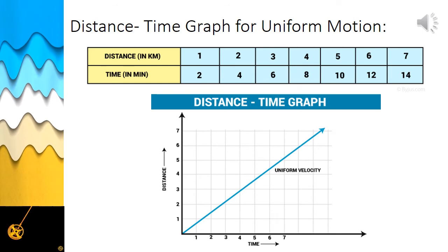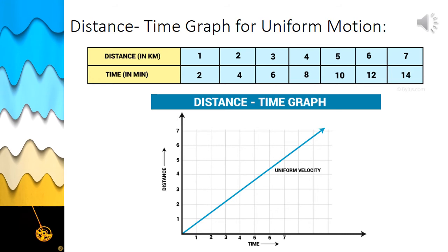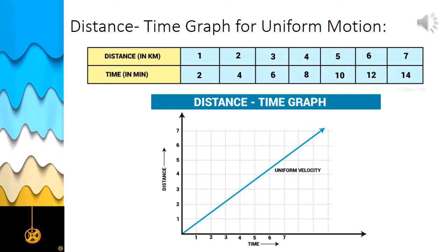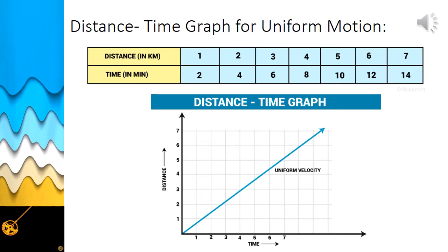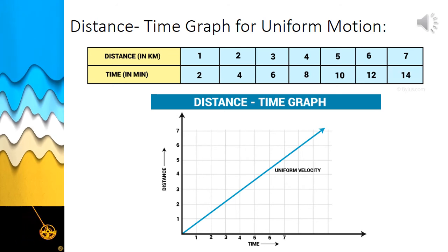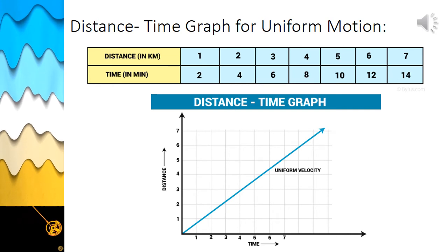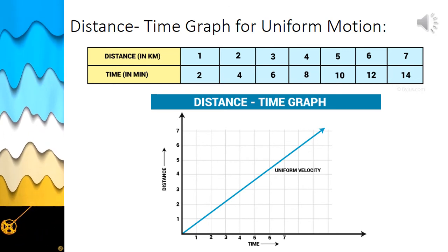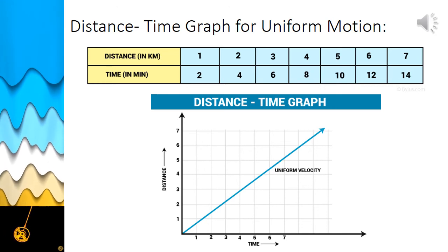Remember: when the distance-time graph is a straight line, it indicates that the object is moving at a constant speed, which means the object is in uniform motion. So whenever the distance-time graph is a straight line, the object is moving in uniform motion. From this distance-time graph, one can also find the distance covered by the body at any point in time.